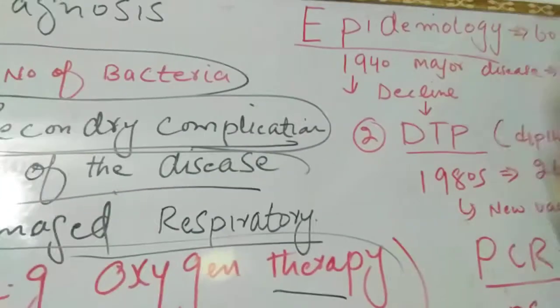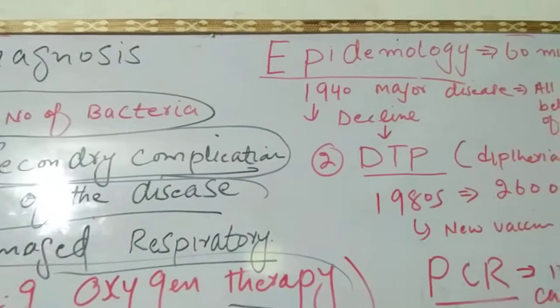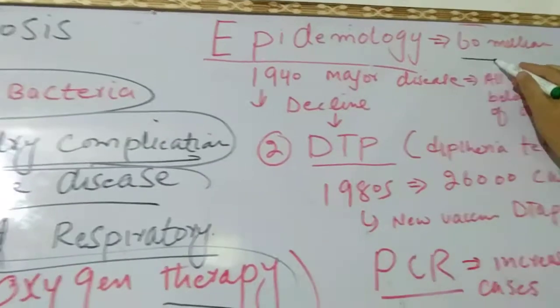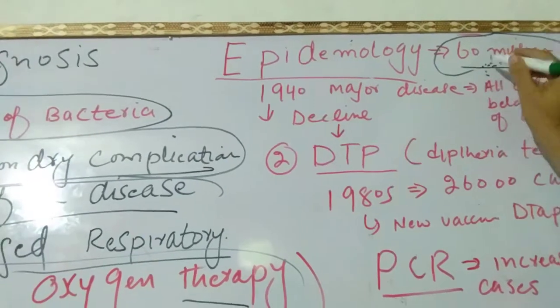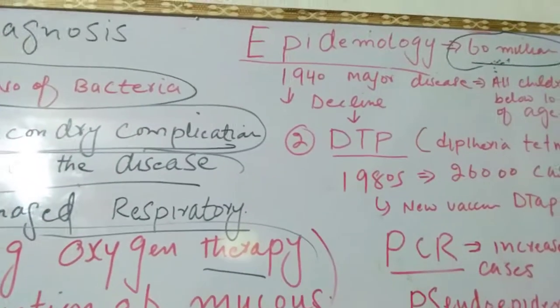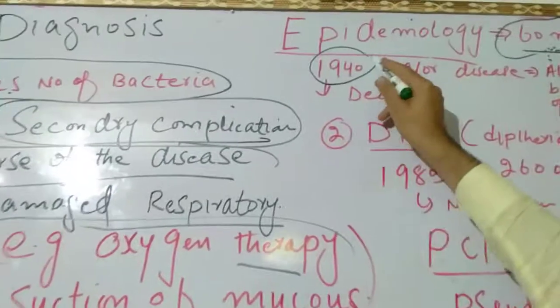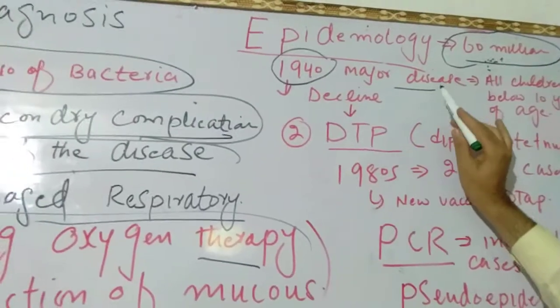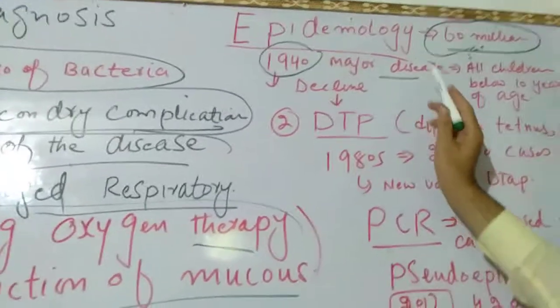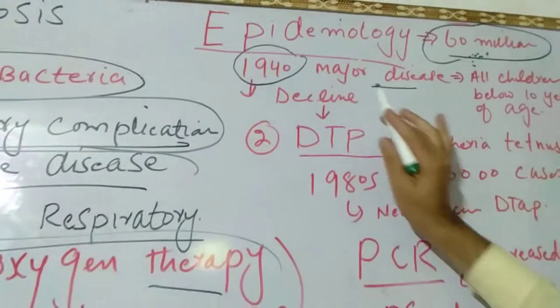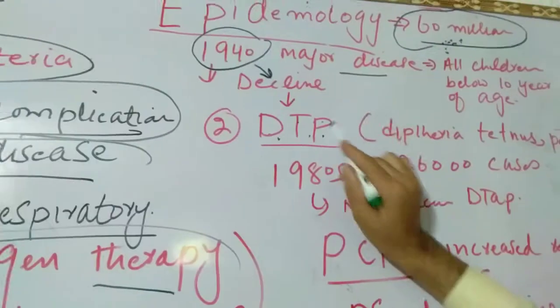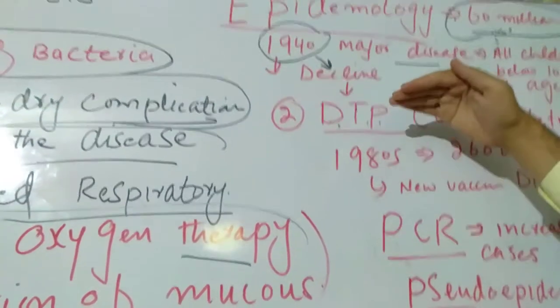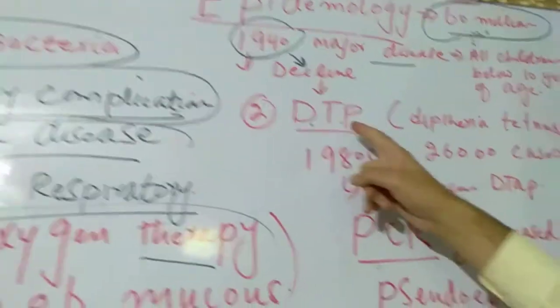Regarding the epidemiology of this disease, about 60 million cases are reported annually throughout the world. In 1940, this disease was a major disease because it affected all children below 10 years of age. But due to the introduction of the DTP vaccine — diphtheria, tetanus, pertussis vaccine — cases declined with the passage of time due to immunization.